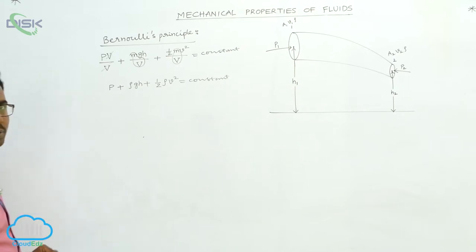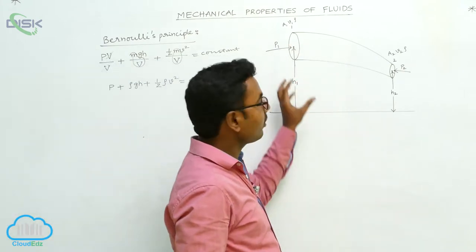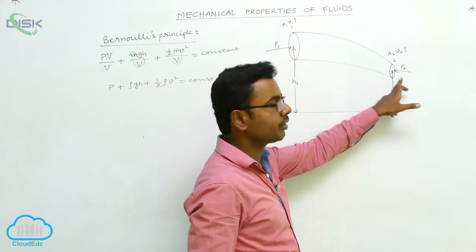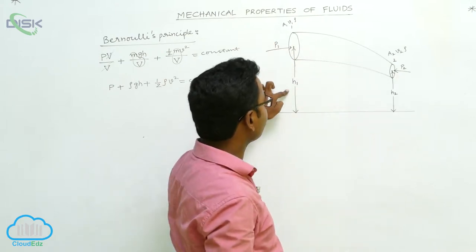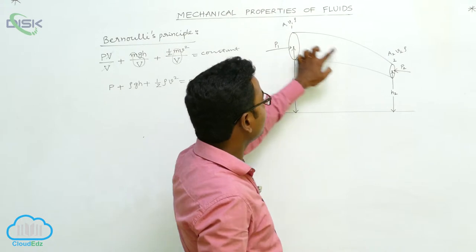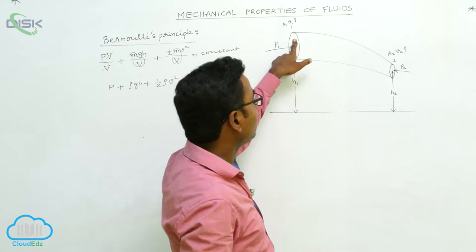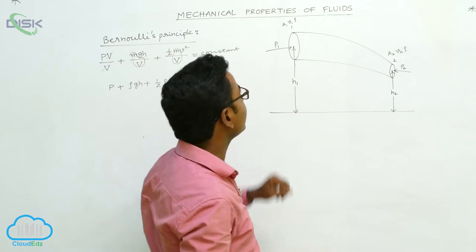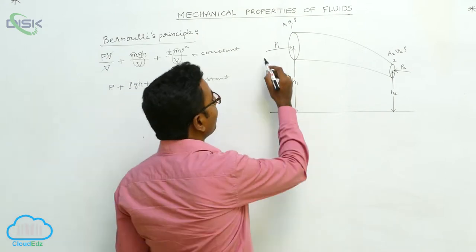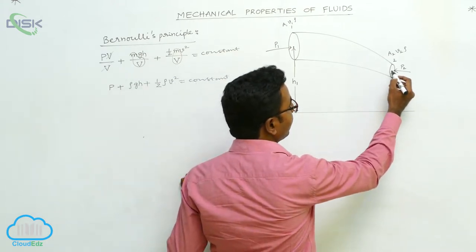Now let us prove Bernoulli's principle. To prove it, we consider a tube of flow with varying cross-sectional area. If the cross-sectional area varies, then velocity also varies. We consider two cross-sections: area A1 with fluid velocity v1 and pressure P1 acting inward, and area A2 with fluid velocity v2 and pressure P2 acting inward. Since the fluid is incompressible, the density rho is the same at both cross-sections.